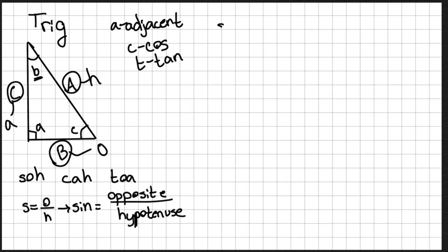Sine is opposite over hypotenuse, and our opposite is B, and our hypotenuse is A. So the sine of B is going to be B over A.